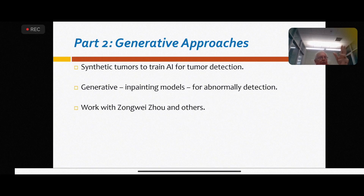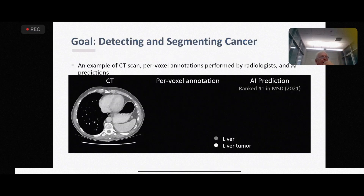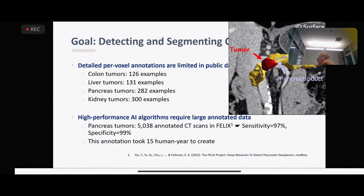That would be the first part, and then we'll have to say something about generative anomaly detection. Here is some work driven by my postdoc, Zongwei Zhao. We're working first on liver, dealing with the issue that you don't have much annotated data.